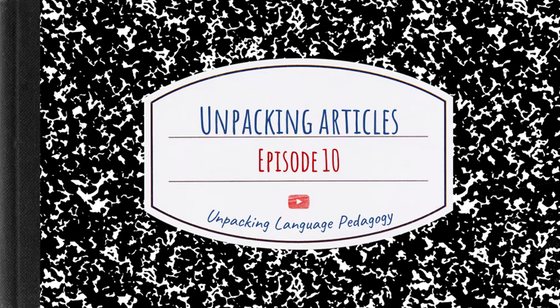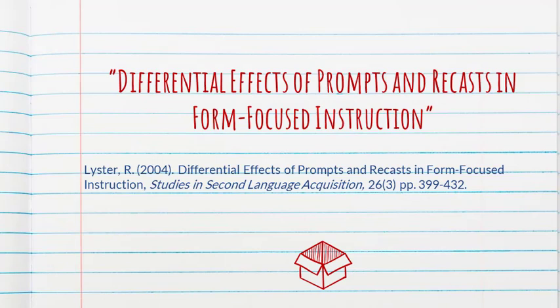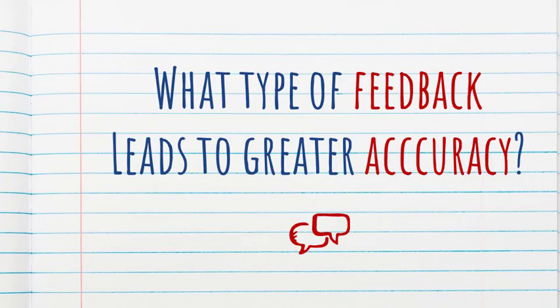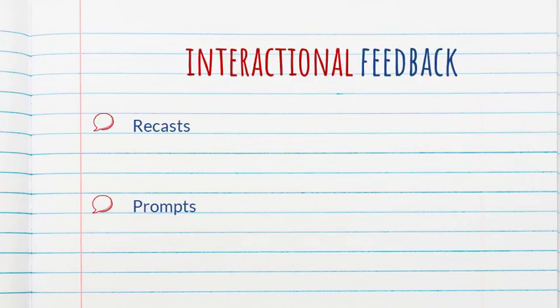Hello and welcome to episode 10 of Unpacking Articles. The article we're going to be unpacking today is a classic in the literature on corrective feedback: Differential Effects of Prompts and Recasts in Form-Focused Instruction. As the title implies, the study tries to answer the question of what type of feedback leads to greater grammatical accuracy, and in particular it compares two types of feedback strategies: prompts and recasts.